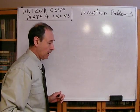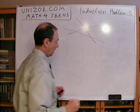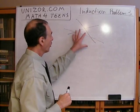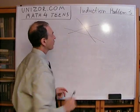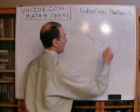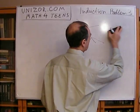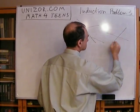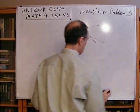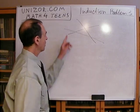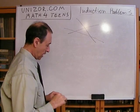Here's the problem. Let's assume you have a certain number of lines on the plane. We will assume that there are no parallel lines and no more than two lines cross at any particular point — so no three lines crossing at exactly the same point. We have only non-parallel lines with crossings of no more than two lines at any point.